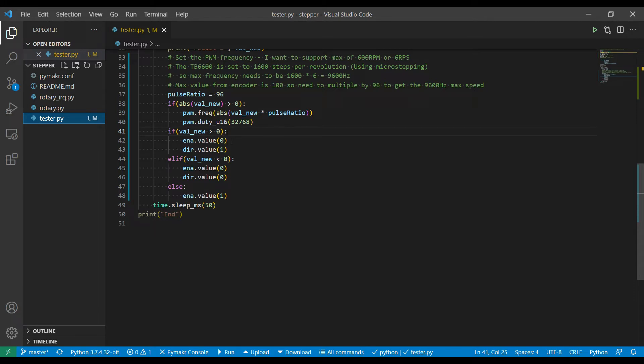Again, testing if the new value, in this case not absolute value, is greater than zero, then it's going to enable the driver. So down here, if the rotary encoder value is zero, it disables the motor, and that way it doesn't use power when it's set to zero. And then it sets the direction to one if it's a positive value.